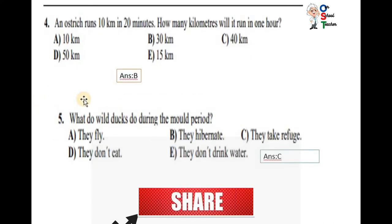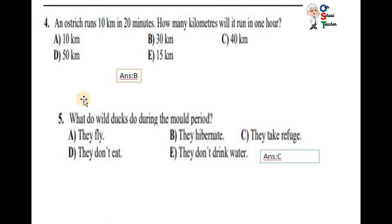Now question number four. An ostrich runs 10 km in 20 minutes. How many km will it run in one hour? You know an hour has 60 minutes. So when you divide 60 minutes, 20 plus 20 plus 20. In 20 minutes, it can run 10 km. So 10 plus 10 plus 10. It is 30. 30 km is the correct answer.